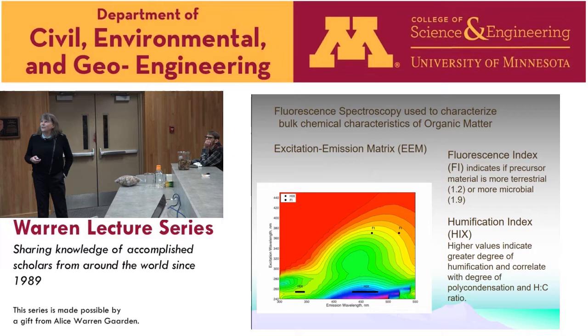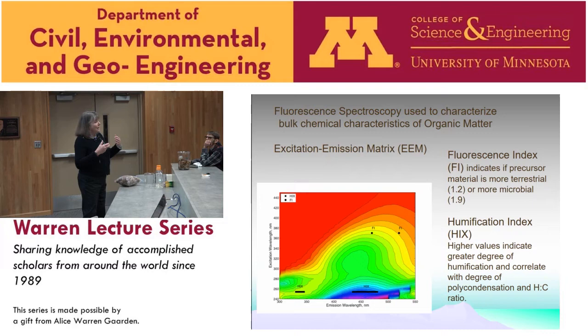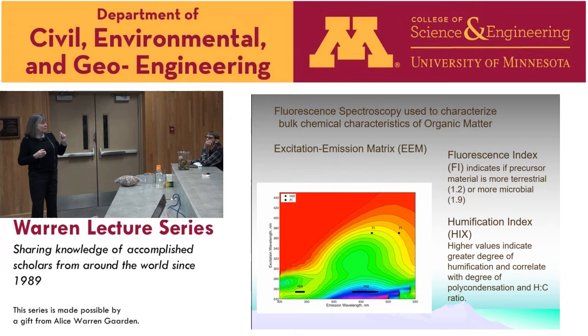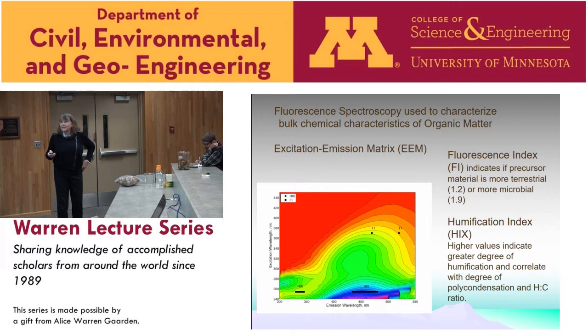Another technique is fluorescence spectroscopy, which is potentially very powerful because the light absorbed by this colored organic matter can be emitted as fluorescence, and that inherently tells us something about the chemistry of the light-absorbing molecule — the wavelength at which light is absorbed and emitted can be specific to a certain kind of chemical. People refer to fluorescence as a fingerprint, but there has to be underlying chemistry for this to happen.